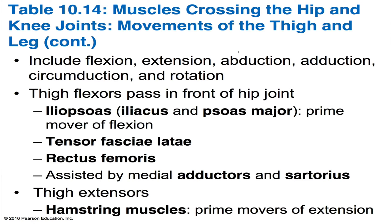The iliopsoas is made up of two muscles, the iliacus and the psoas major, and is the prime mover of thigh flexion. Thigh extension is affected primarily by the hamstring muscles of the posterior thigh, and during forceful extension the gluteus maximus is activated. The gluteus medius and gluteus minimus, which lie lateral to the hip joint, abduct the thigh. Abduction and adduction of the thighs are extremely important during walking to shift the trunk side to side so the body's weight is balanced over the limb on the ground.